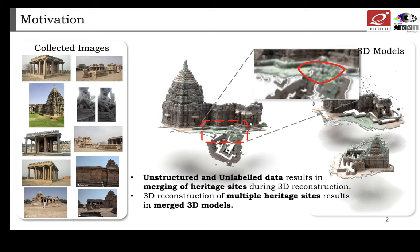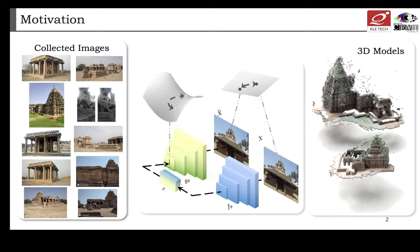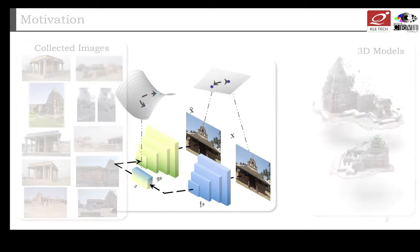Dimensionality reduction methods like PCA, kernel-based PCA, etc., extract features from images which might not be suitable for categorization. Extracting relevant features with deep learning-based methods is the current trend.